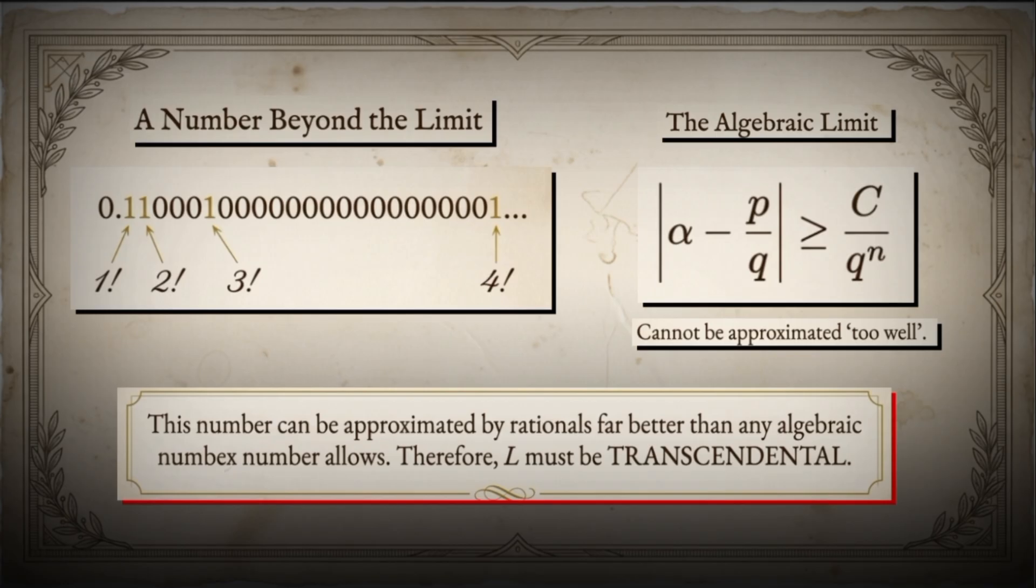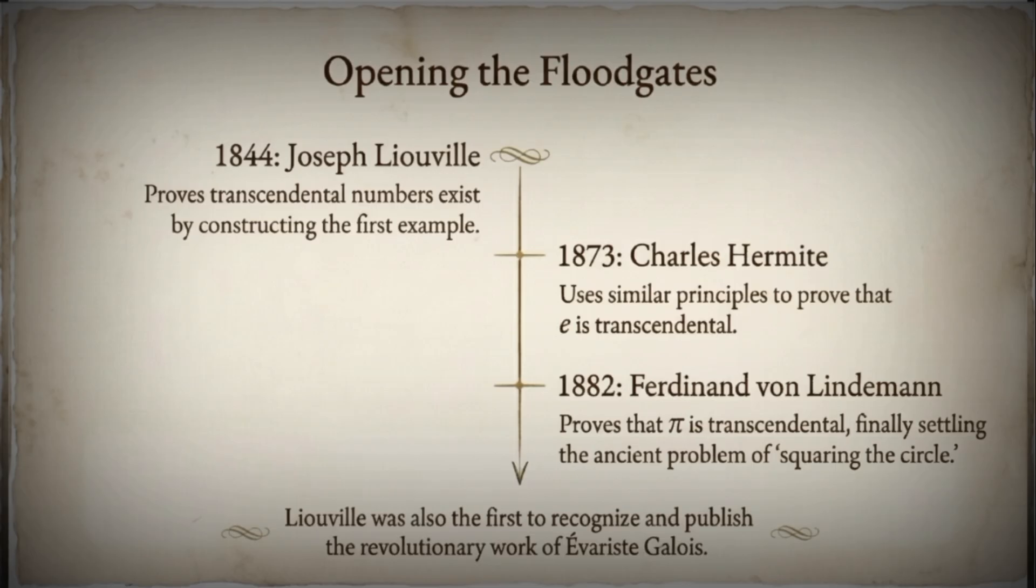This was the first explicit example of a transcendental number in mathematical history. After Liouville's breakthrough in 1844, mathematicians built on his methods. In 1873, Charles Hermite proved that e is transcendental. In 1882, Ferdinand von Lindemann proved that pi is transcendental.